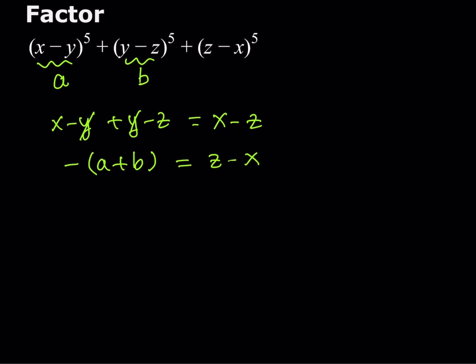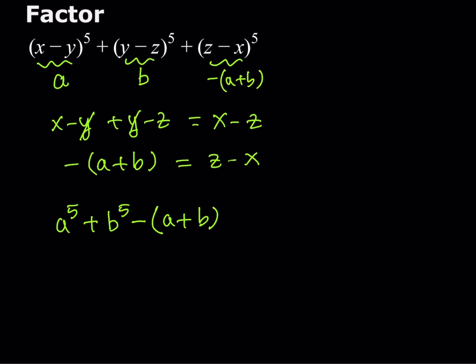This gives me a nicer expression. I get a to the fifth power plus b to the fifth power, and since we're raising a negative one to the fifth power, that brings a negative. So the third term is negative of (a plus b) to the fifth. In other words, if we can factor this, we've already factored the original expression.